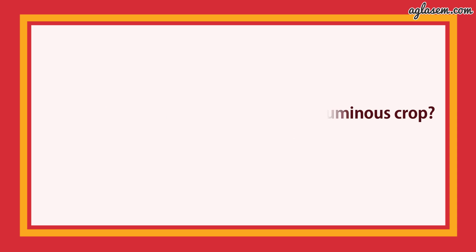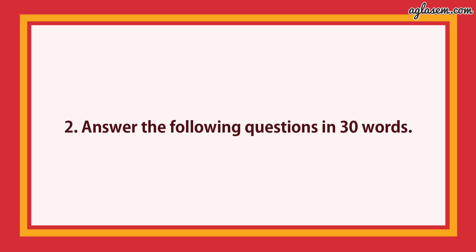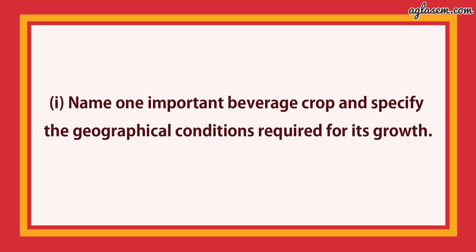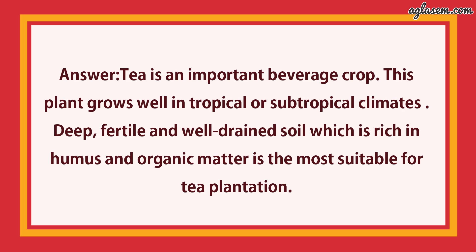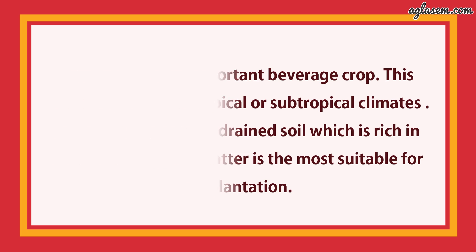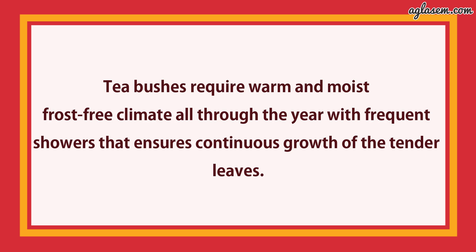Question number 2: answer the following questions in about 30 words. First: name one important beverage crop and specify the geographical conditions required for its growth. Answer: tea is an important beverage crop. This plant grows well in tropical and subtropical climates. Deep, fertile and well-drained soil, which is rich in humus and organic matter, is most suitable for tea plantation.